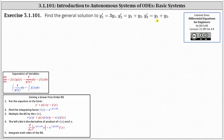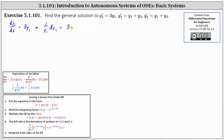Notice the first differential equation only contains y one prime and y one, so we can solve for y one using separation of variables. Writing y one prime as dy one dx and separating variables gives us one divided by y one dy one equals three dx. Integrating both sides gives us natural log of the absolute value of y one equals three x plus c, where c is a constant.